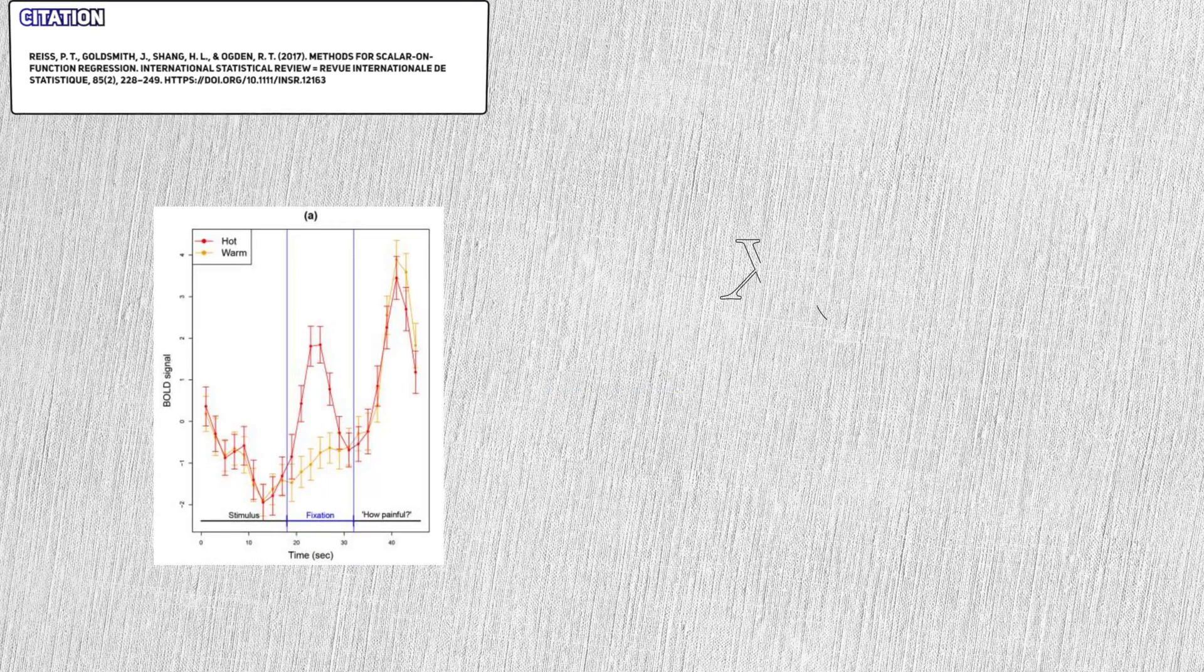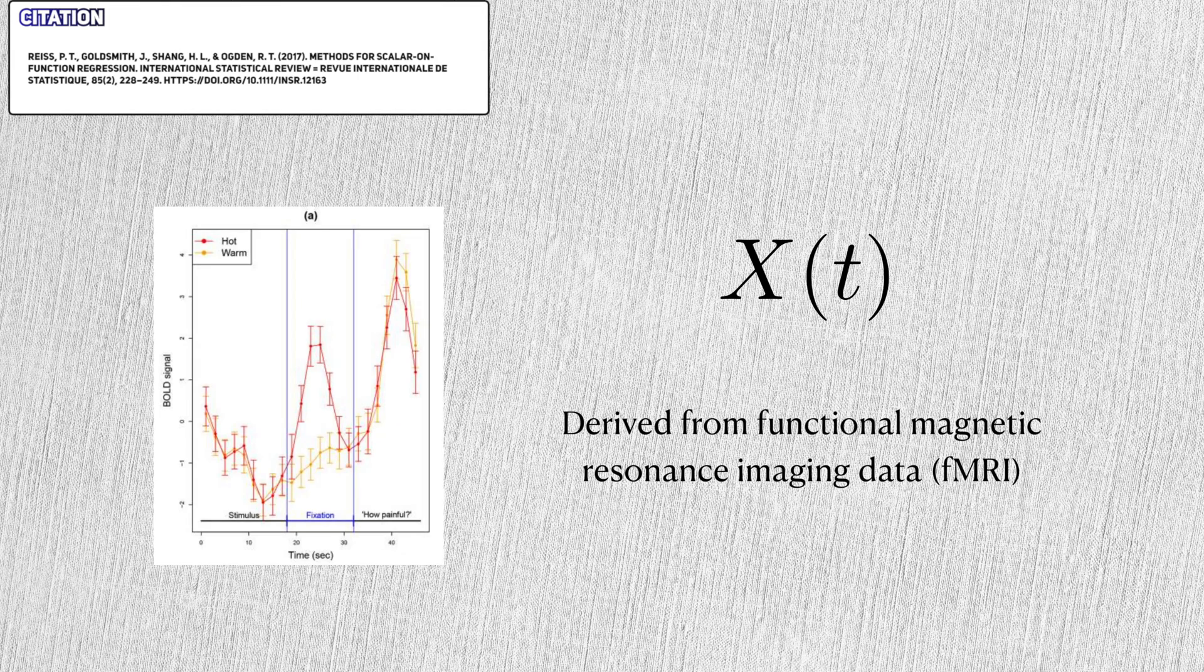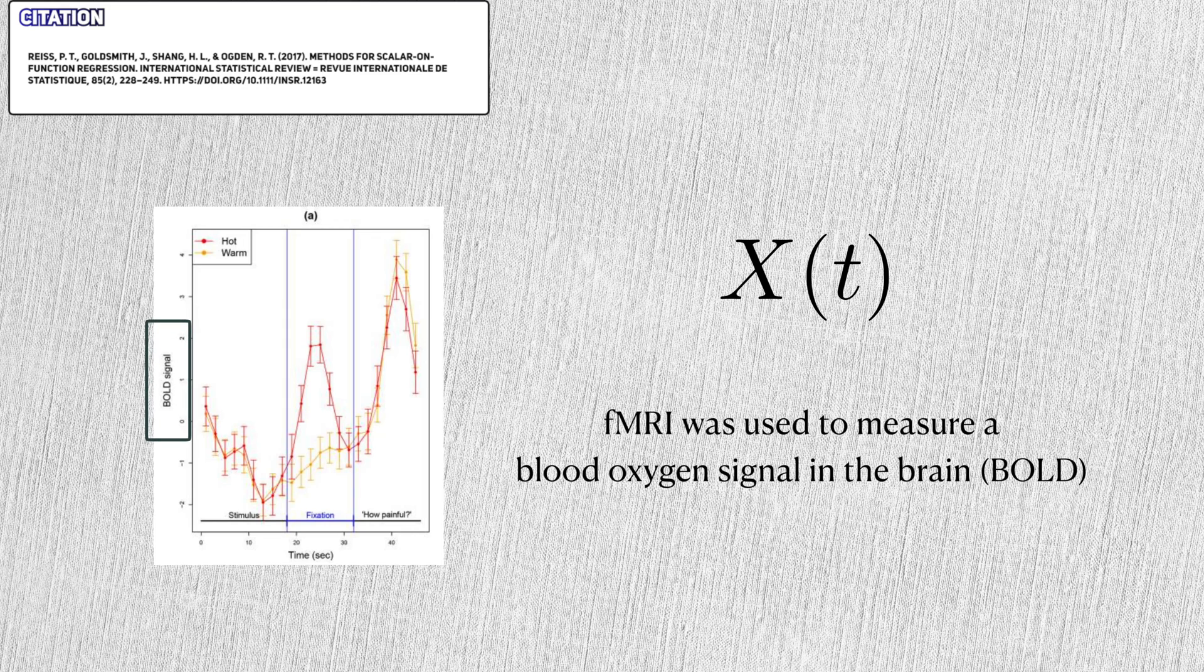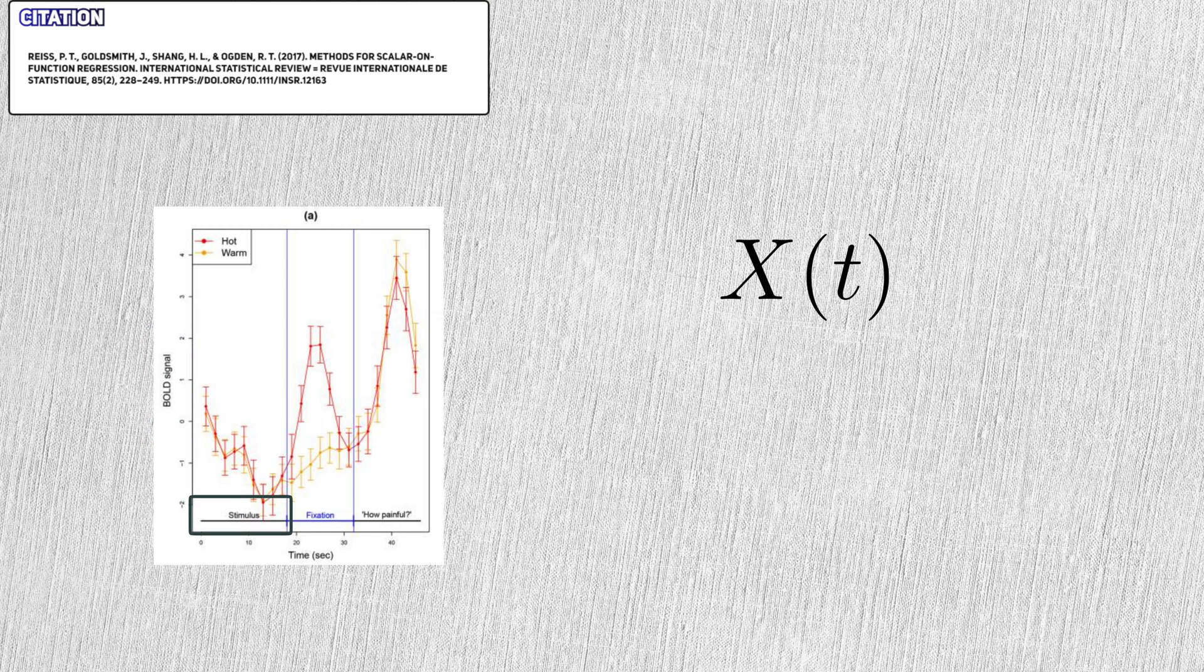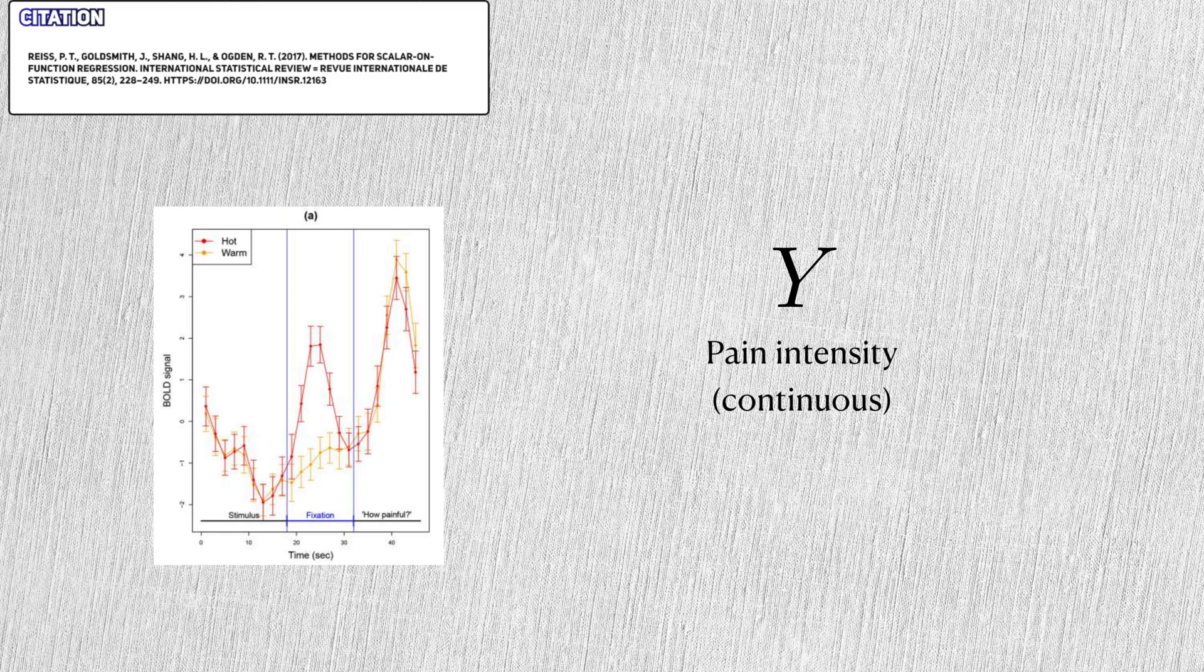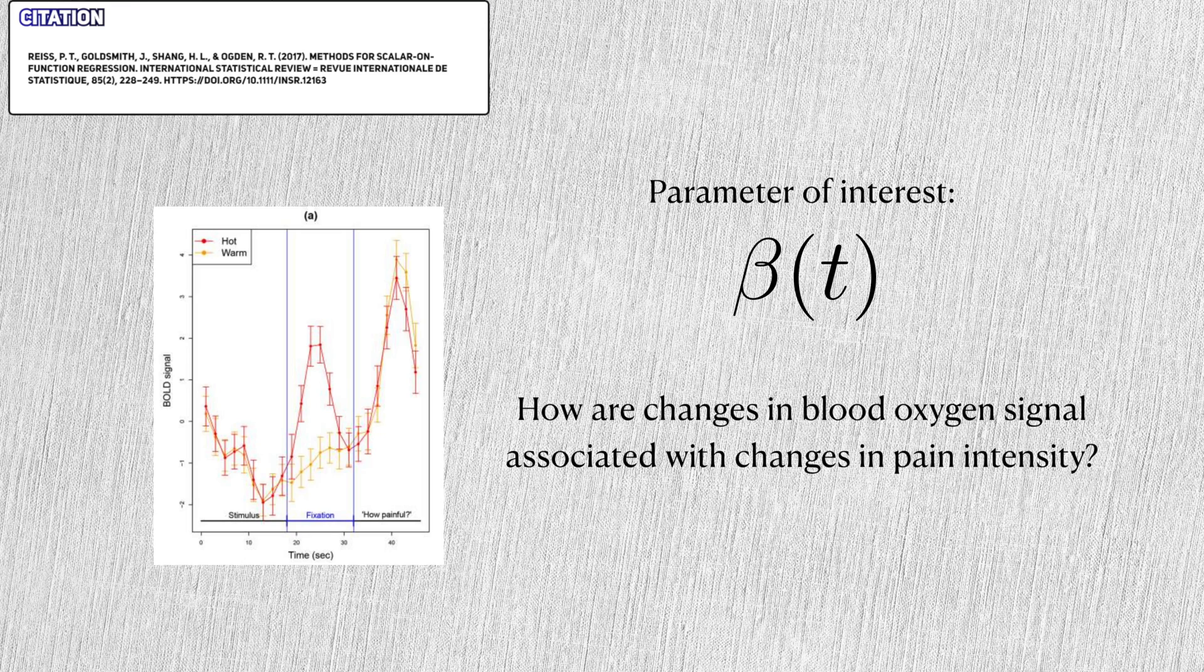In this paper, the functional covariate was derived from functional magnetic resonance imaging, or fMRI. fMRI was used to measure the blood oxygen level activity in a particular area of the brain, which they've abbreviated as BOLD. A hot and warm stimulus was applied to a subject's arm, and this brain signal was tracked over time, which forms a functional covariate. The outcome in this case is pain intensity, so the researchers were interested in seeing how changes in this brain signal over time could affect this outcome.